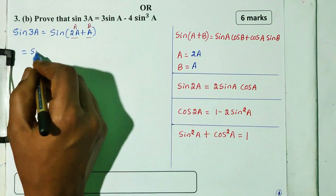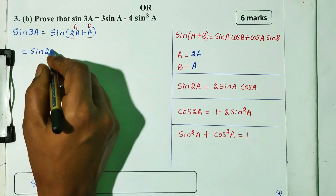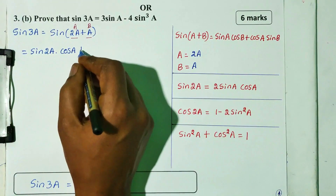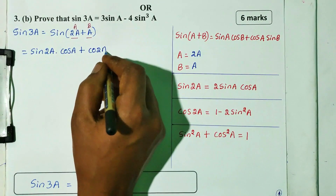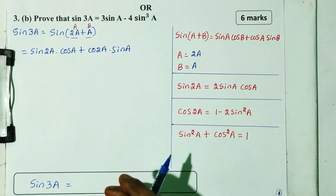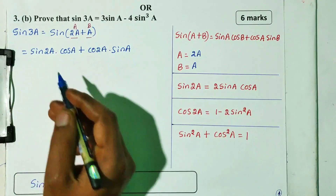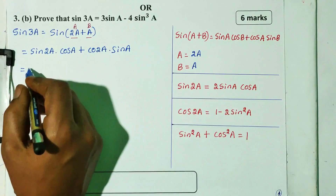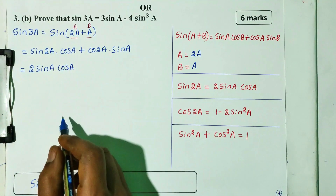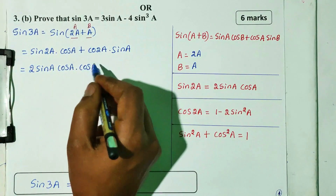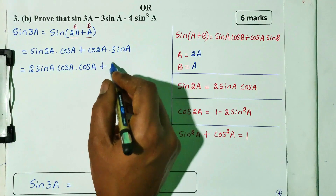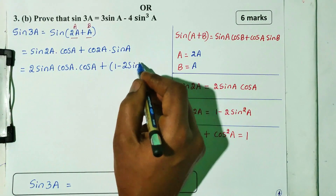Substituting: sin 2A cos A plus cos 2A sin A. Now, sin 2A equals 2 sin A cos A, so we have 2 sin A cos A into cos A. The formula gives us 2 sin A cos squared A plus cos 2A sin A.